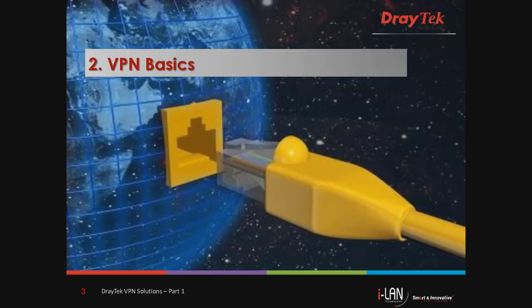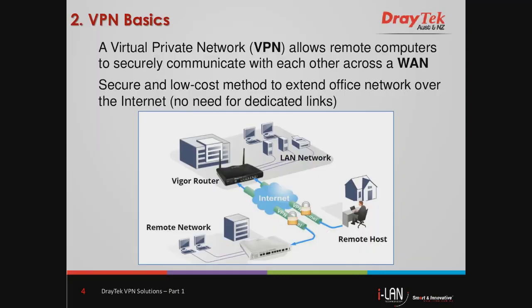Let us start by looking at VPN basics. A virtual private network, otherwise known as VPN, allows remote computers to securely communicate with each other across the internet. Using VPNs provides a secure and low-cost method to extend the office network over the internet. There's no need for a dedicated link between two sites to securely exchange data. Therefore, a VPN becomes an extension of a private network using links spread across shared or public networks such as the internet.